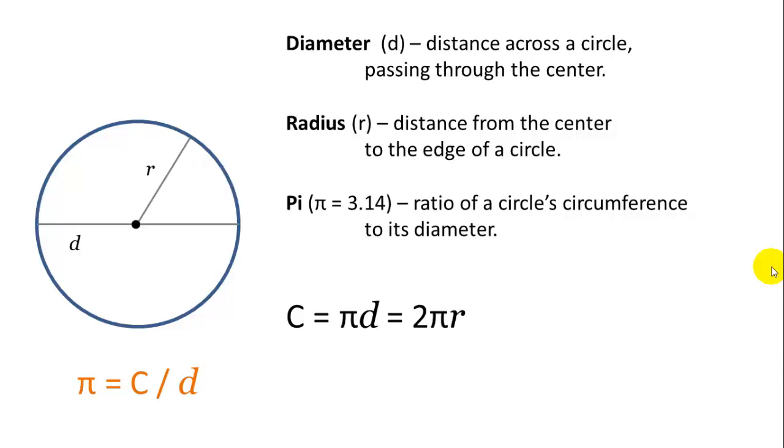R is equal to one half of the diameter, and pi is a constant. Pi is equal to 3.14 for all circles. It's the ratio of a circle's circumference to its diameter, so pi equals C over d. We can rearrange that formula to circumference equals pi times the diameter, or 2 times pi times the radius, 2πr.